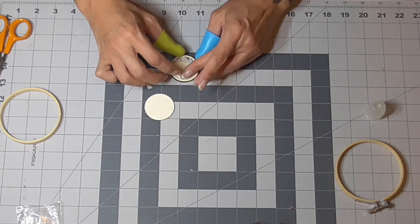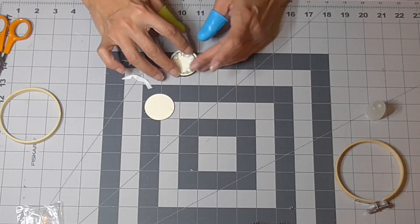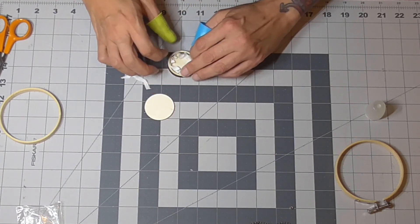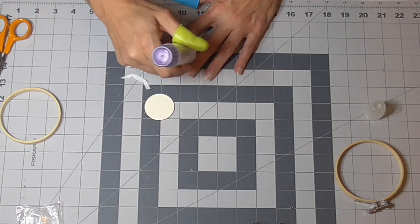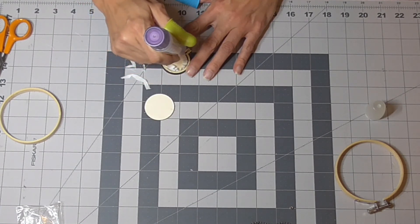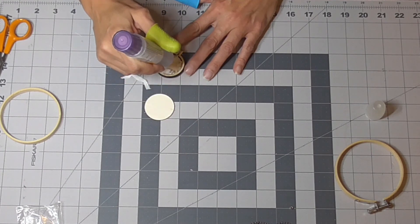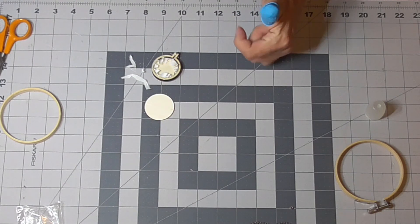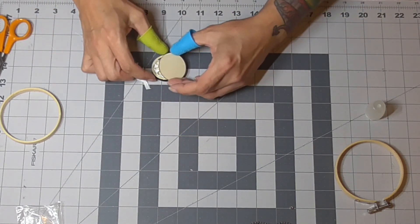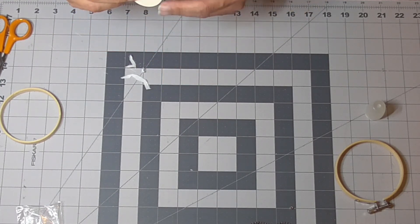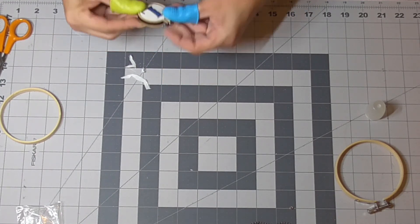Now you're going to fold these bits in. Tuck it in the best you can. Put a little bit of glue on the outside. And then you can tack your back on. Make sure all your fabric is tucked in there.